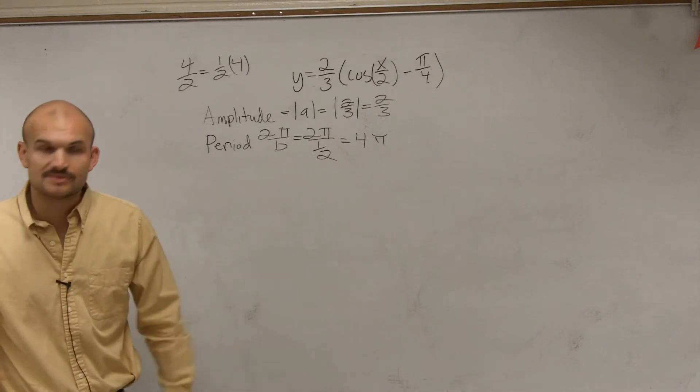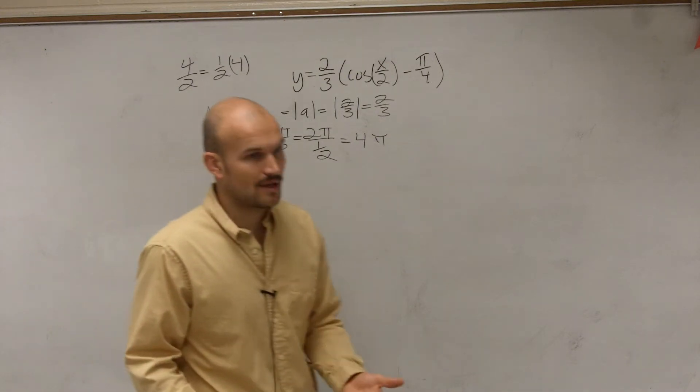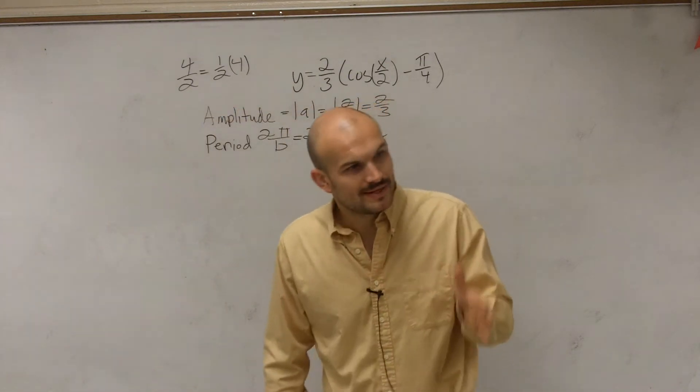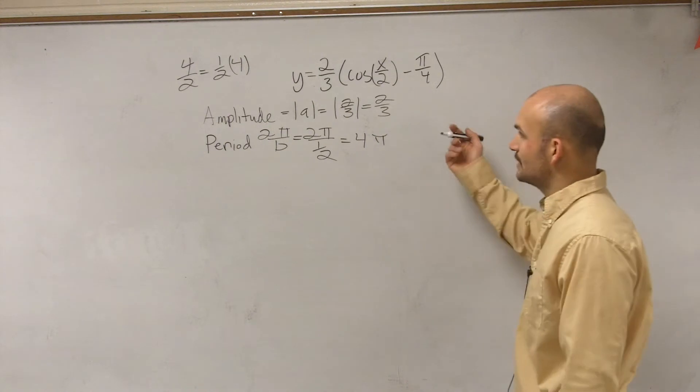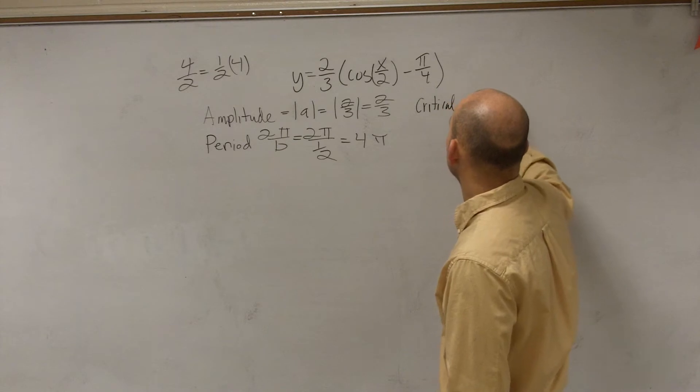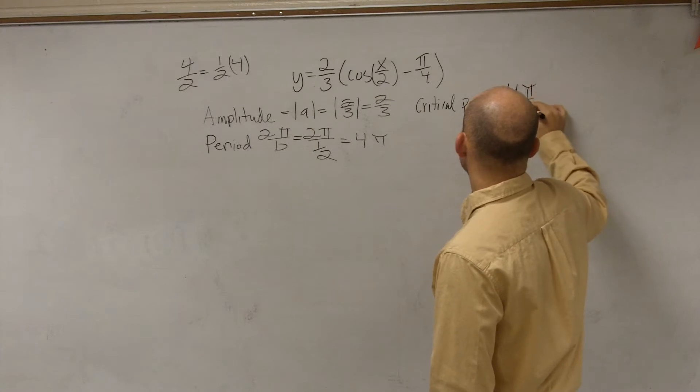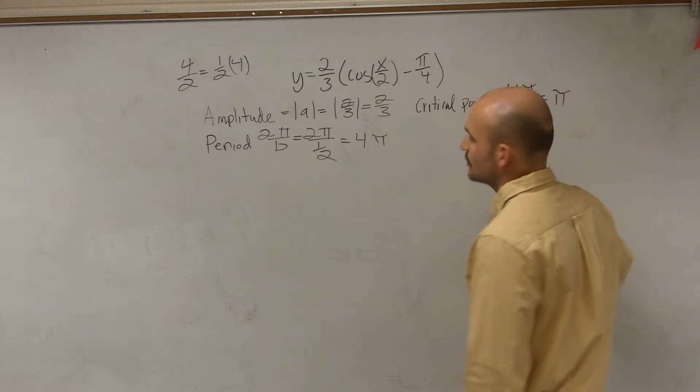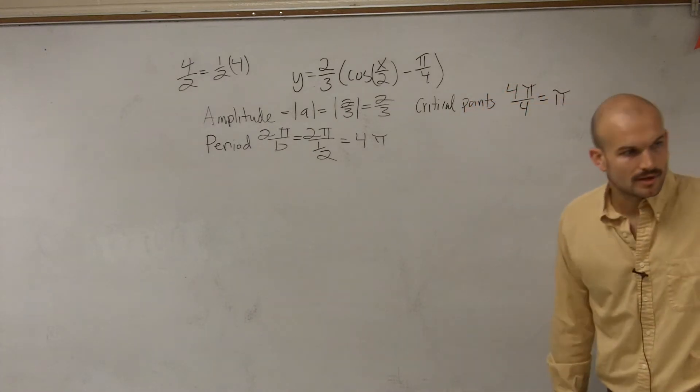The next thing we do is we find our critical points or the x scale. What's the difference between each of these points? So again, all we do is we take our period and we divide it by 4. So our critical points is 4 pi divided by 4, which is pi.